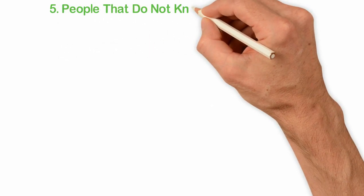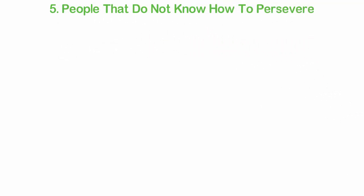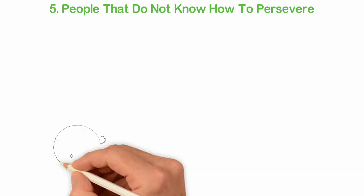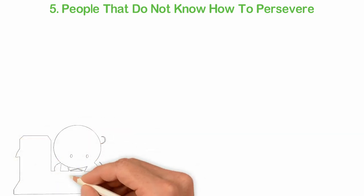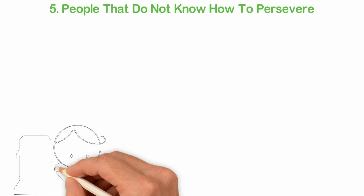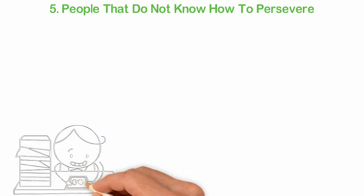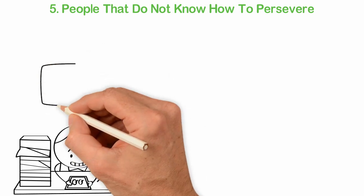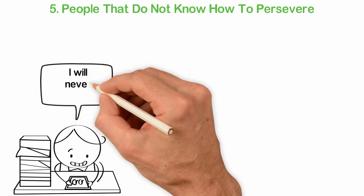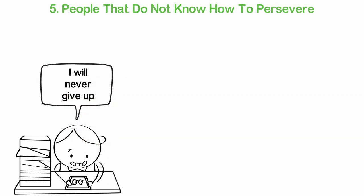Five: People that do not know how to persevere. To be focused and hardworking is one thing. To persevere, however, is an entirely different thing. Perseverance is persistence in doing something despite difficulty or delay in achieving success. It is what keeps you going when you don't get the expected result you imagined you would change the world at a particular period in time.